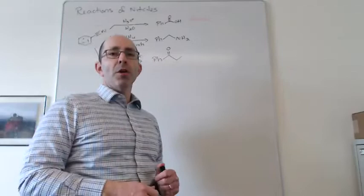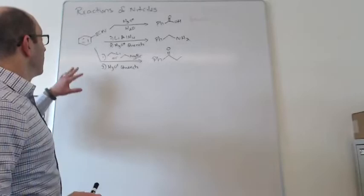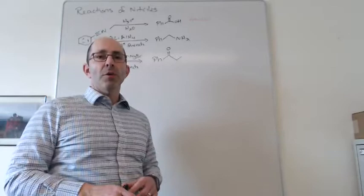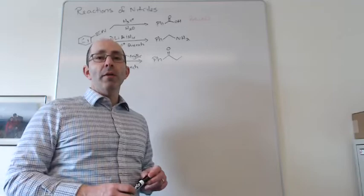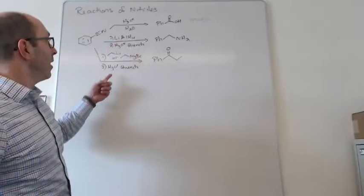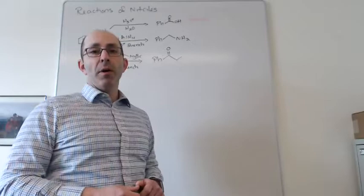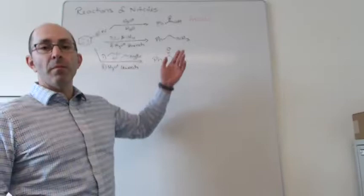The two reactions I want to focus on are ones we saw just before the break — I want to make sure we're clear on those and write out the mechanism. We're treating our nitrile C triple bond N — a carbon attached to an electronegative element with two pi bonds — so it behaves similarly to a carbonyl. We can add a strong hydride nucleophile or a strong carbon nucleophile to make a new C-H or C-C bond, and with lithium aluminum hydride we're able to make an amine, which is a really useful molecule.